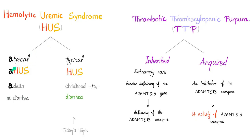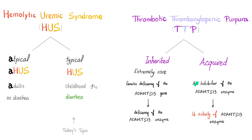Hemolytic uremic syndrome is divided into atypical HUS and typical HUS. Typical HUS is the childhood one with bloody diarrhea; atypical will be covered in the next video. Thrombotic thrombocytopenic purpura has inherited and acquired forms — not atypical and typical. Inherited TTP is extremely rare: it's an autosomal recessive genetic disease with genetic deficiency of the ADAMTS13 gene. Acquired TTP is far more common — there we have an inhibitor, not a deficiency, of the ADAMTS13 enzyme, which leads to decreased activity.